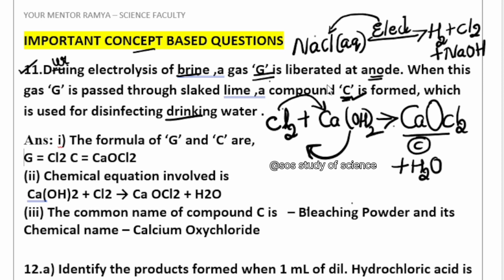To summarize: brine solution is sodium chloride solution. When we pass electricity we get hydrogen and chlorine gas. Hydrogen gas is released at cathode, chlorine gas is released at anode. You must also learn the uses of hydrogen gas, chlorine gas, and sodium hydroxide — they are given in the textbook near the diagram.